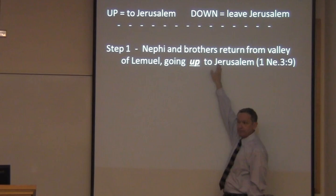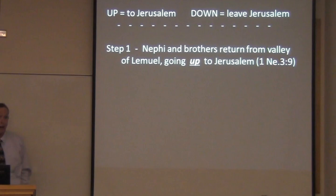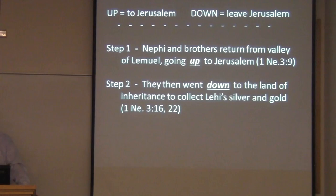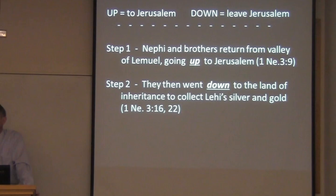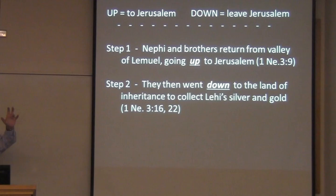Then, when Laban won't give them the plates, Nephi notes in 1 Nephi 3:16–22 that they go down to the land of inheritance to collect Lehi's silver and gold. Now, what the silver and gold is doing — not in Jerusalem in Lehi's house, but dozens of miles away at the land of inheritance — is a question that we'll put on hold for a minute, but there's a really good substantive answer to it.